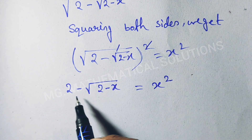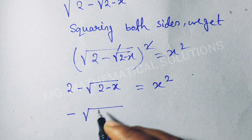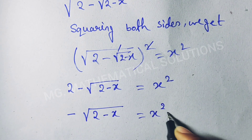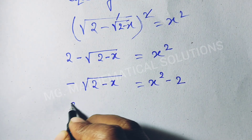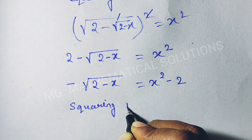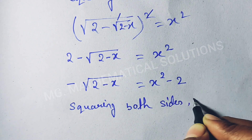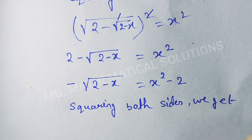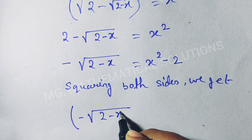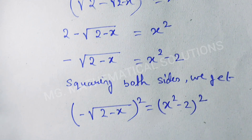Now we write the radical term on the right side. So: minus root under (2 minus x) equals x squared minus 2. Again, squaring both sides: minus root under (2 minus x), whole squared, equals (x squared minus 2), whole squared.